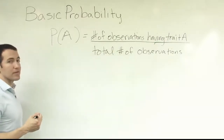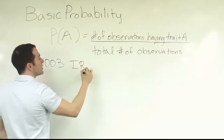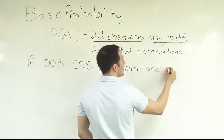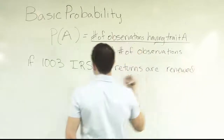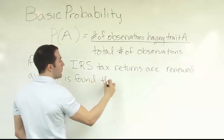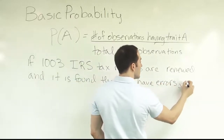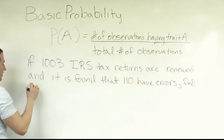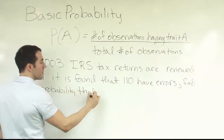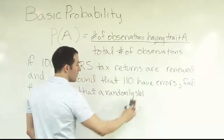Let's take an example problem from an IRS scenario. If 1003 IRS tax returns are reviewed and it is found that 110 have errors, find the probability that a randomly...